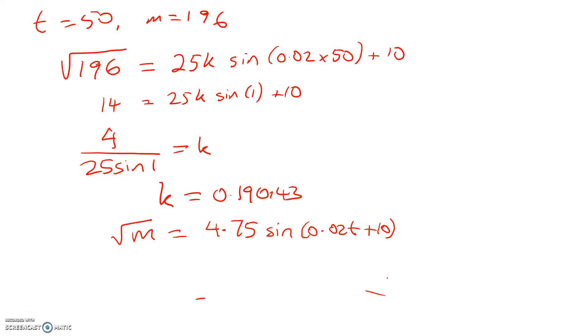That gives me root M is equal to 4.75 sin(0.02t) plus 10. Now, let's think about what the last part of the question asked. It wanted to know what was the minimum number of microorganisms. So I'm going to square both sides now, and I get M is equal to [4.75 sin(0.02t) plus 10] squared.